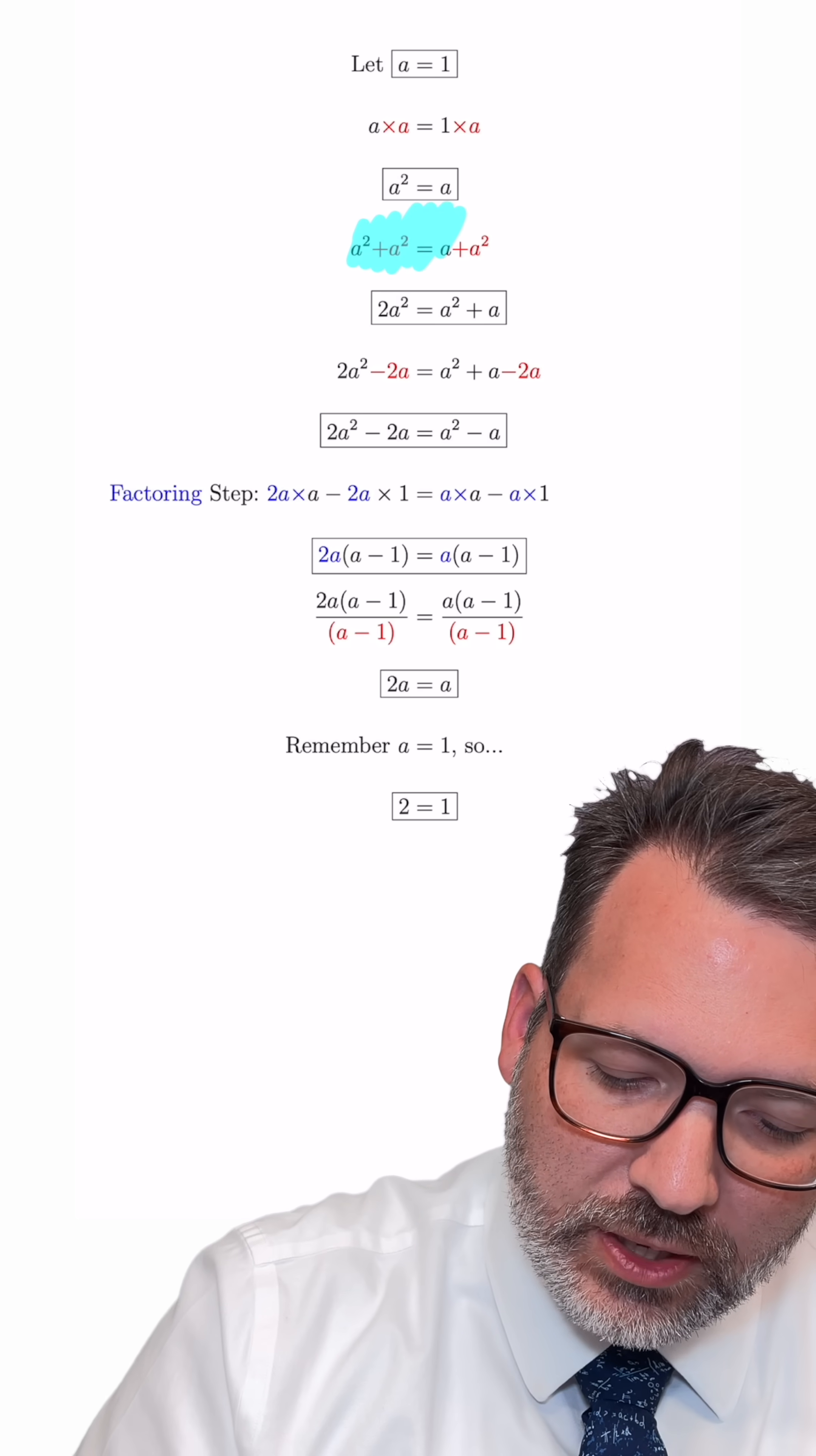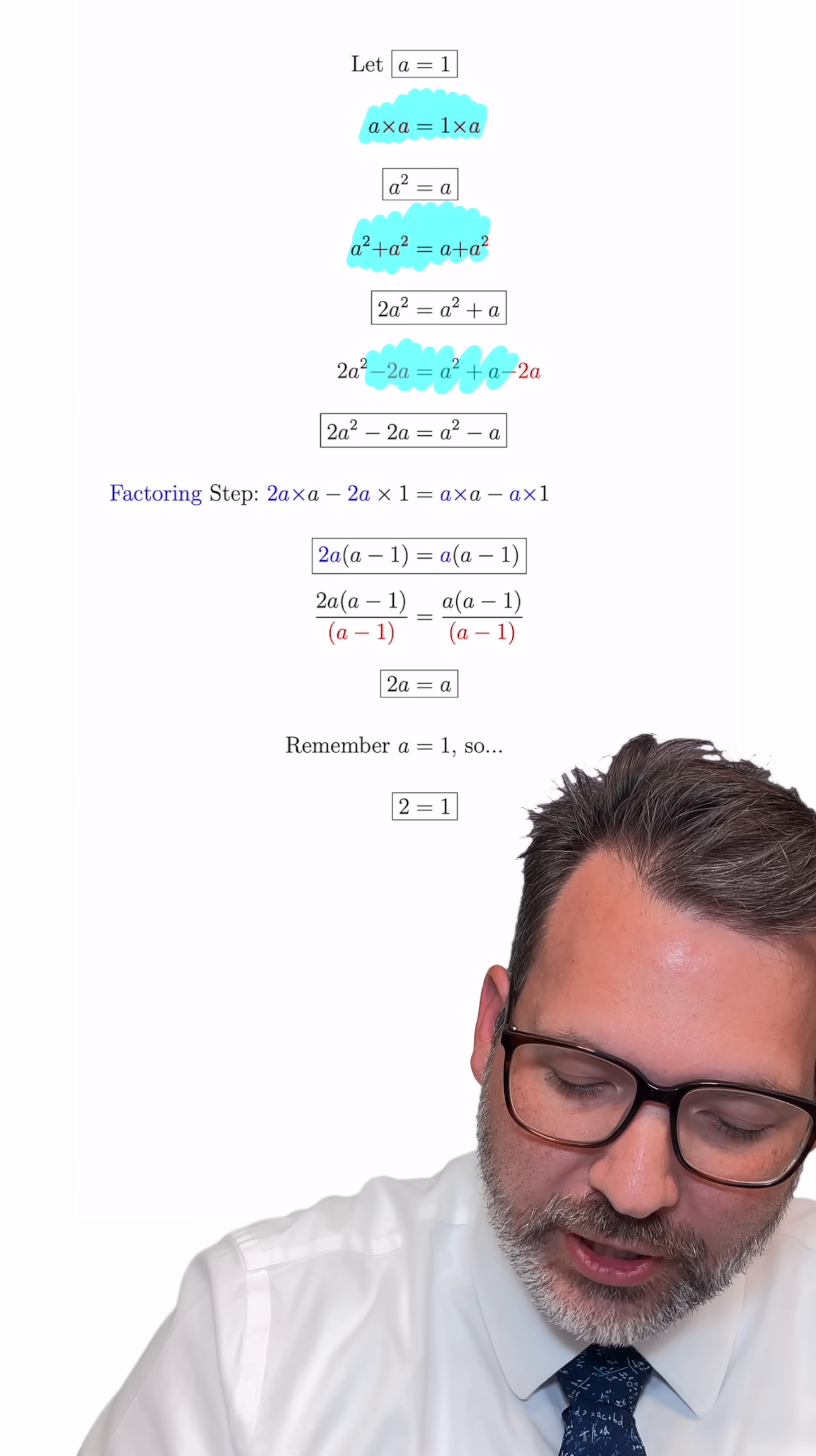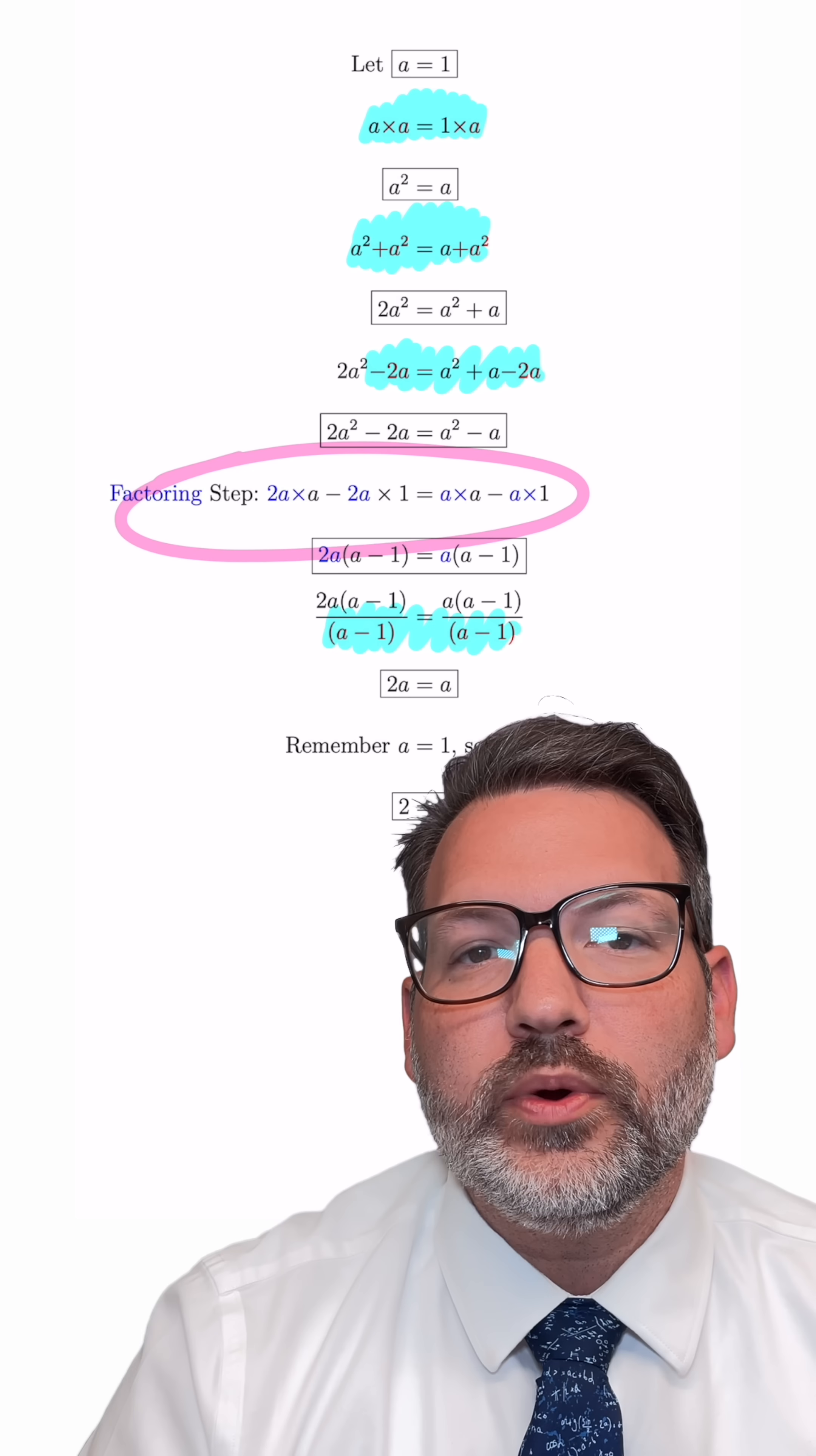We've got one step that uses the addition property of equality to add the same quantity to both sides of an equation. Another step that uses the multiplication property of equality. We've got the subtraction property of equality, the division property of equality, and then everybody's favorite thing in the world: factoring.